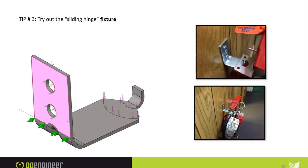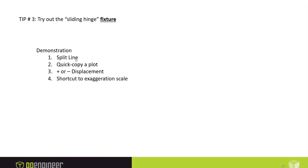Tip number three: fixtures. I'm going to show a fixture type I call a 'sliding hinge' — I use it very often. There's not actually a fixture called sliding hinge in SolidWorks Simulation; it's a special way to create a certain type of fixture. My example is a simple fire extinguisher bracket — right by my office door. The load case has a fire extinguisher hanging on the end weighing about 9.8 pounds, and bolts going into the wall. I'll also show creating a split line, copying a plot, and some shortcuts to the exaggeration scale.